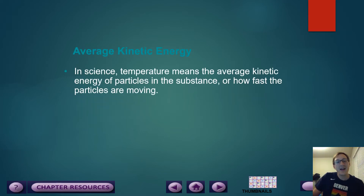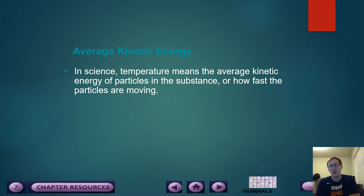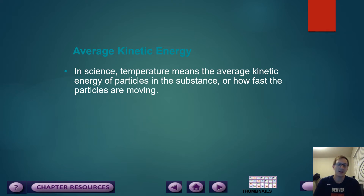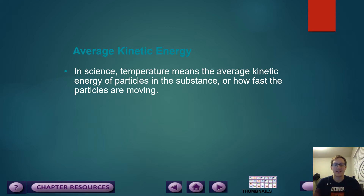Average kinetic energy is what we know as temperature. In science, temperature means the average kinetic energy of particles in the substance, or how fast the particles are moving. If you imagine particles moving really, really fast, that means their temperature is really, really high. So as you heat something up, its tiny particles that you can't even see start moving around and gaining more energy, and as they increase in kinetic energy, they increase in temperature as well.